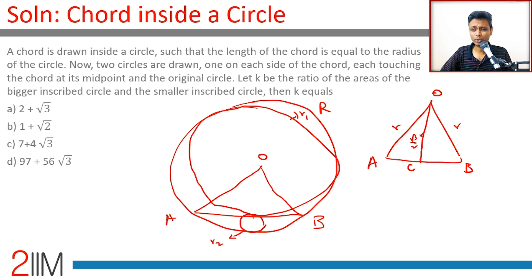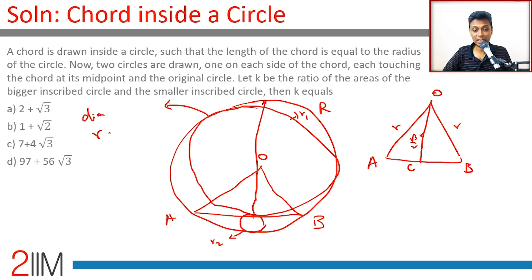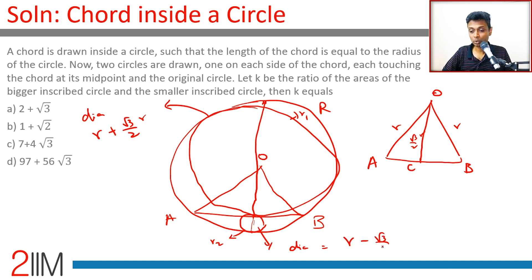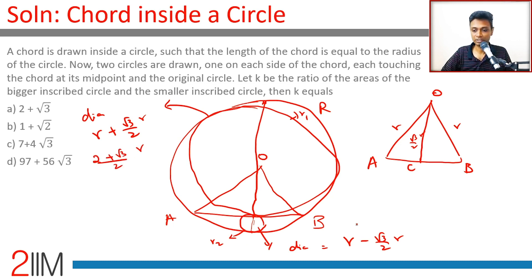The moment you crack this, you're through. The diameter of the larger circle equals r + (√3/2)·r, which is (2 + √3)/2 · r. The diameter of the smaller circle equals r − (√3/2)·r, which is (2 − √3)/2 · r. The ratio of areas is the square of the ratio of the diameters, which equals the square of the ratio of the radii.